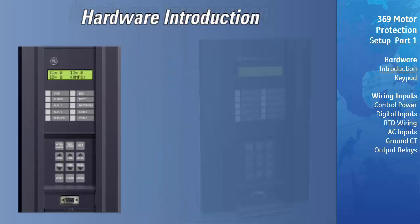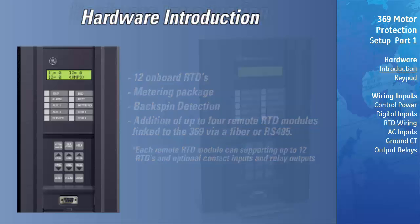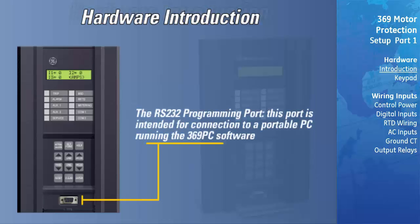369 options include 12 on-board RTDs, a metering package, backspin detection, and the option of the addition of up to four remote RTD modules linked to the 369 via fiber or RS-485. Each remote RTD module can support up to 12 RTDs and optional contact inputs and relay outputs. The RS-232 programming port is intended for connection to a portable PC running the 369 PC software.